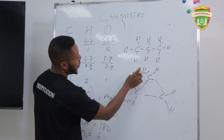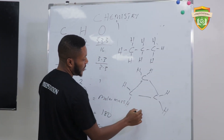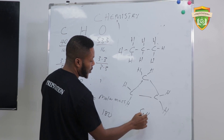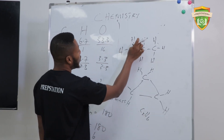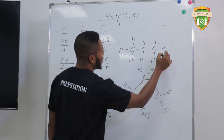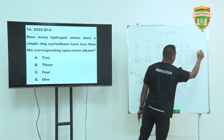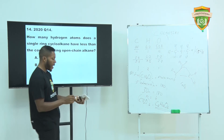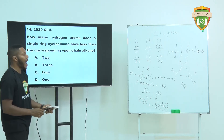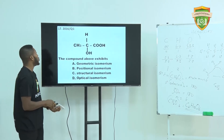So if you count, the cycloalkane has 6 hydrogens — this is C3H6 — against 8 hydrogens for the open-chain alkane — C3H8. So there is a reduction by two hydrogen atoms. The answer there is 2.